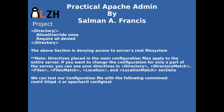If you want to change configuration for only a specific part of the server, you can use directives within Directory, DirectoryMatch, Files, FileMatch, Location, and LocationMatch sections. These sections let you scope directives to a particular part of the server.